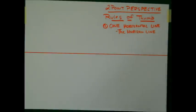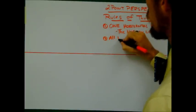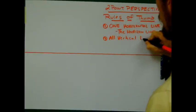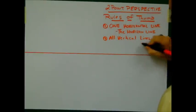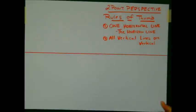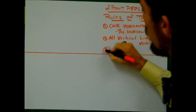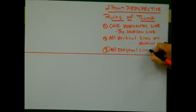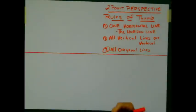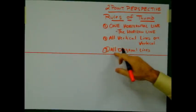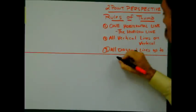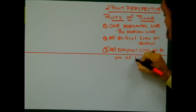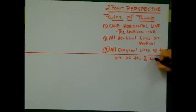The second rule of thumb is that all vertical lines are vertical. If you know a little bit about one-point perspective, that's pretty much the same — all vertical lines are vertical. The third rule of thumb is that all diagonal lines are going to recede or go to one of your two vanishing points. So all diagonal lines go to one of the two vanishing points.